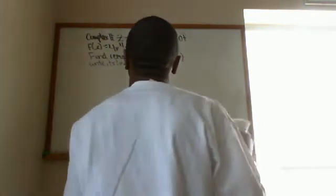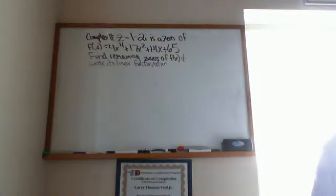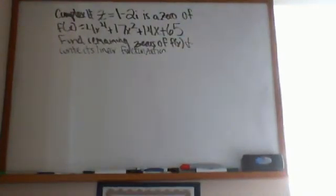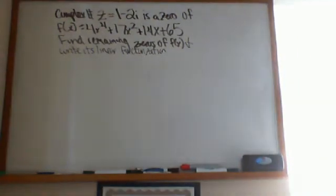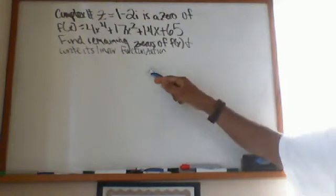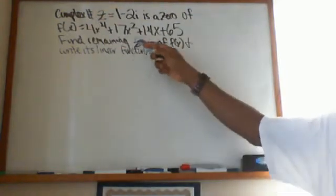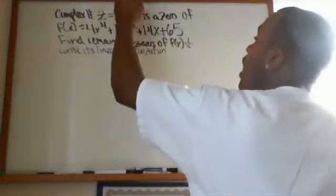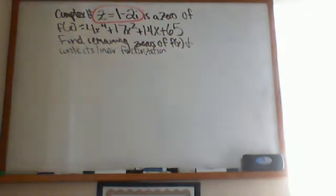I'm going to zoom in so you can see this. Complex number z equals 1 minus 2i is a zero of the function f(x) = 4x⁴ + 17x² + 14x + 65. I want to find the remaining zeros of the function and write its linear factorization. I already have one zero — I need to find all the others.